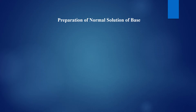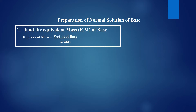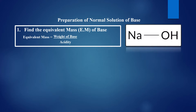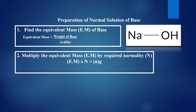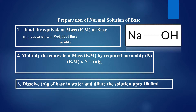In this video we will learn in detail with examples the preparation of normal solution of bases. To prepare a normal solution of any base, always follow these three steps: First, find out the equivalent mass of the base by dividing its molecular weight by its acidity. Then multiply the equivalent mass by the required normality. Take the resulting mass of base, dissolve it in water, and dilute the solution up to 1000 milliliters.